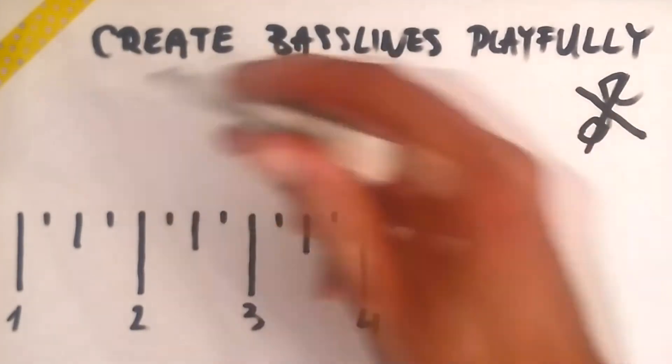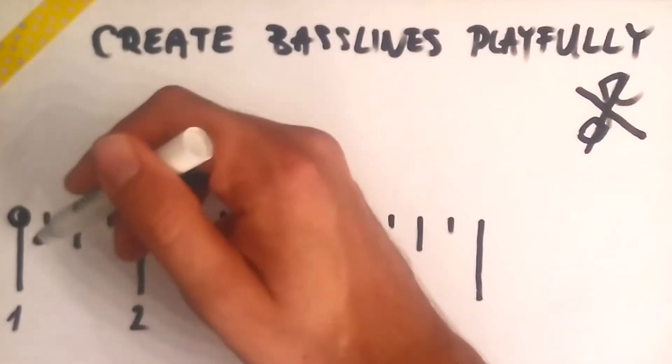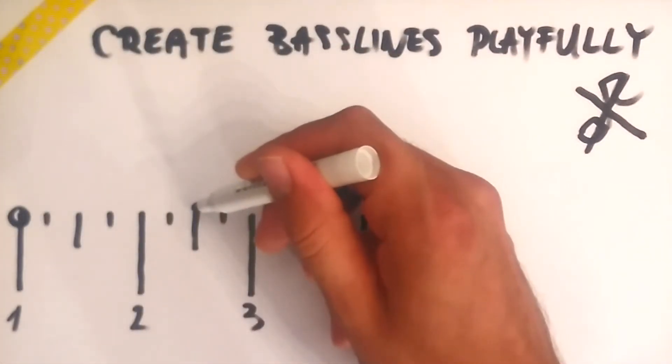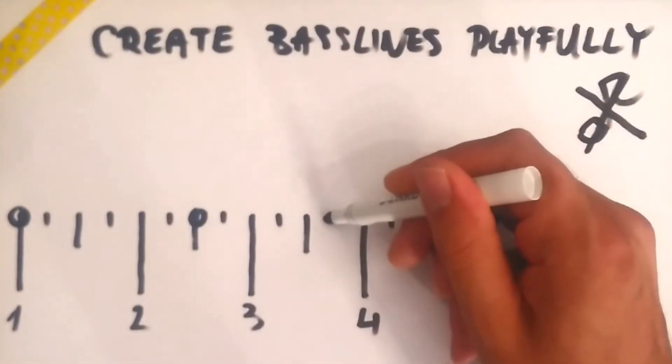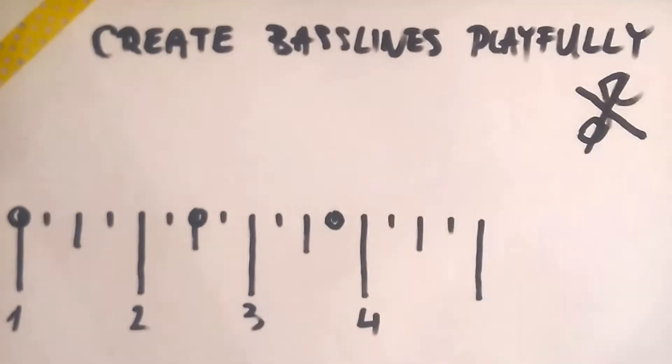So now we ended up with a kind of ruler, which visualizes one measure. Let's assign dots to some of the lines. These will represent places where a note on the bass should be played. We get a bass line as a result, which we can play.